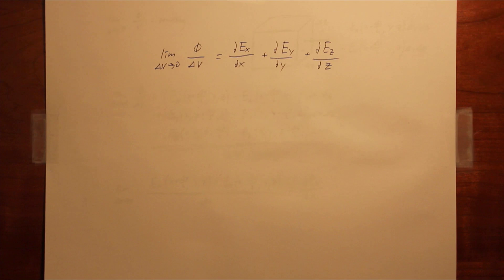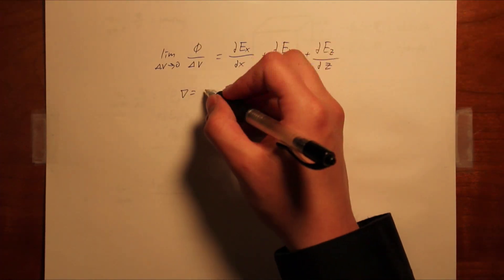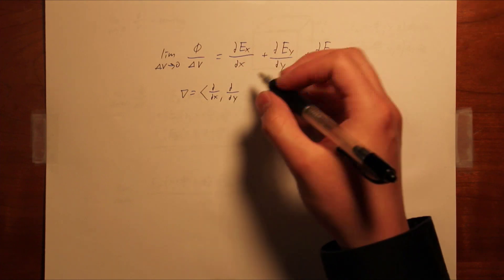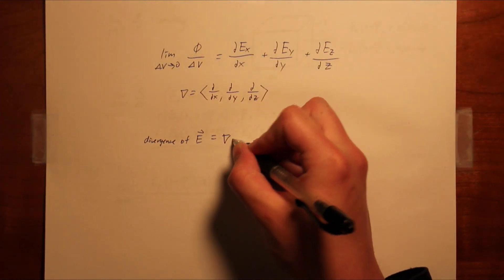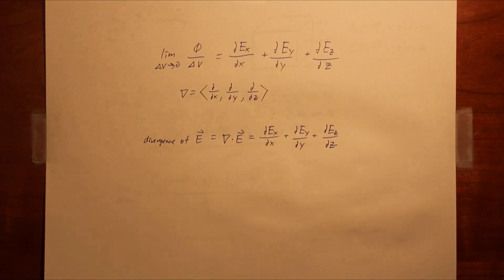This quantity is known as the divergence, and it can be expressed conveniently with the del operator. Remember that del is defined as the vector of partial derivatives. The divergence is then the dot product of del with a vector field.